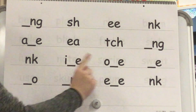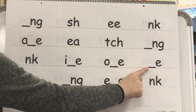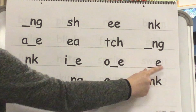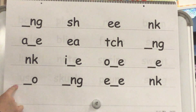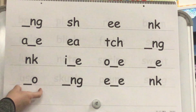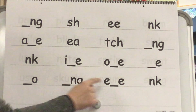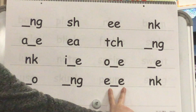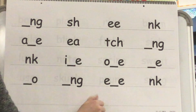O — open syllable. Sound? E — open syllable. Sound? O. Sound? Nk. Sound? E. Sound? Nk.